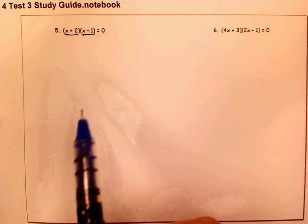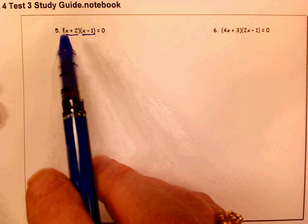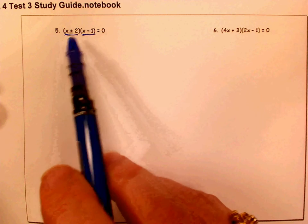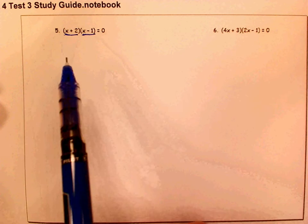That's the zero product property that tells us that. So all we have to do is tell the values of x that make those factors zero.